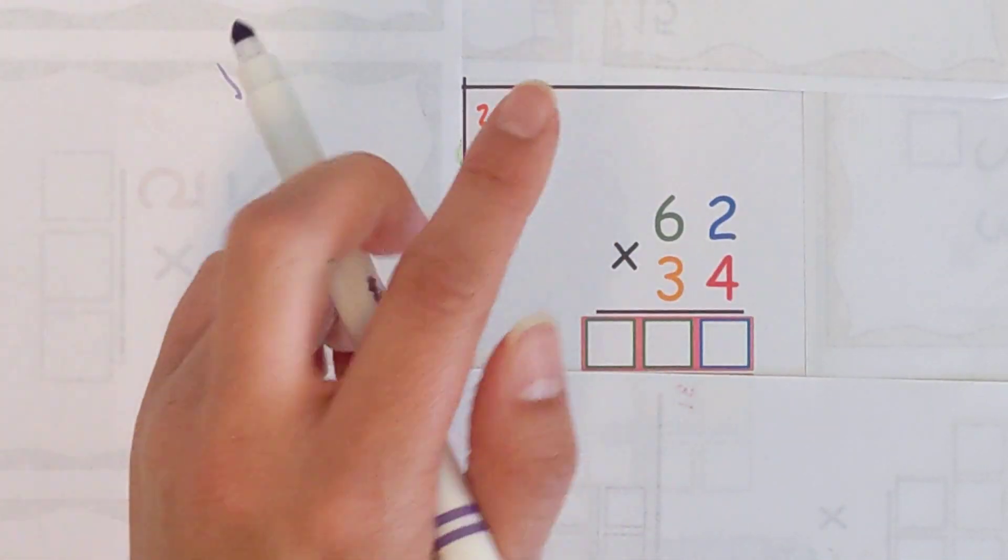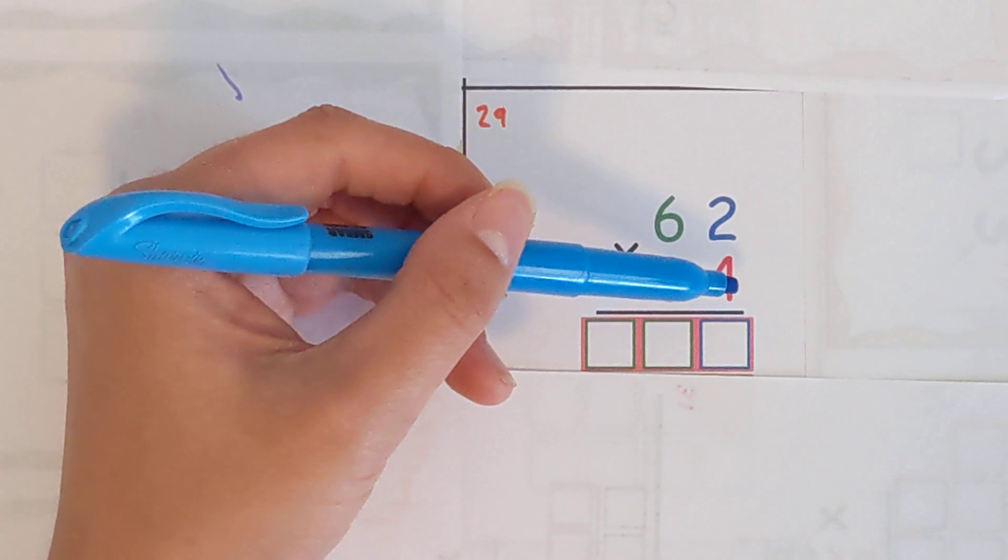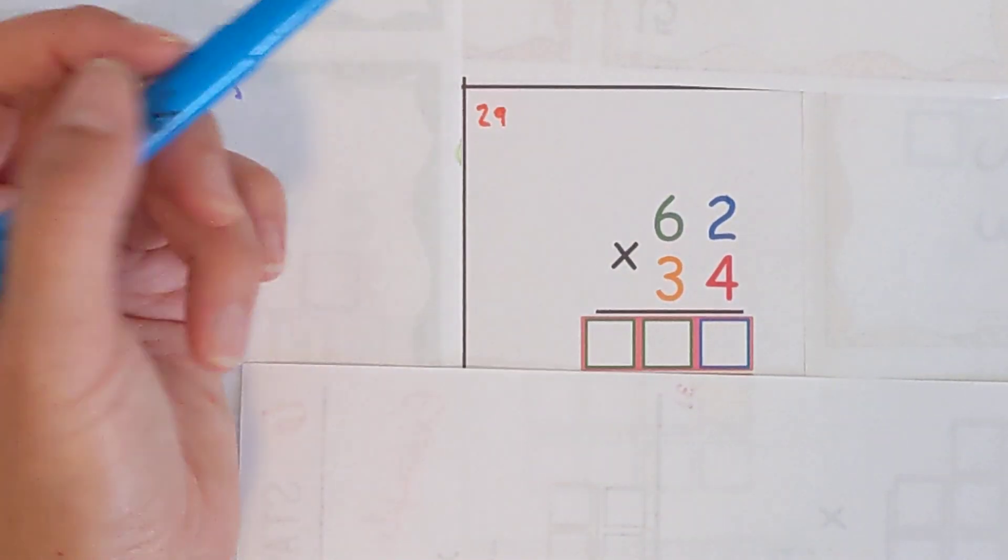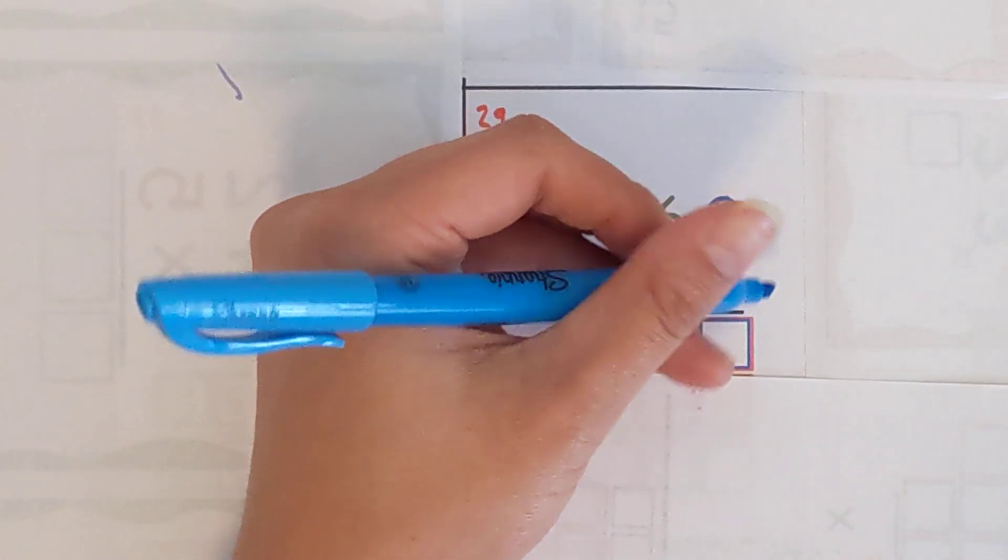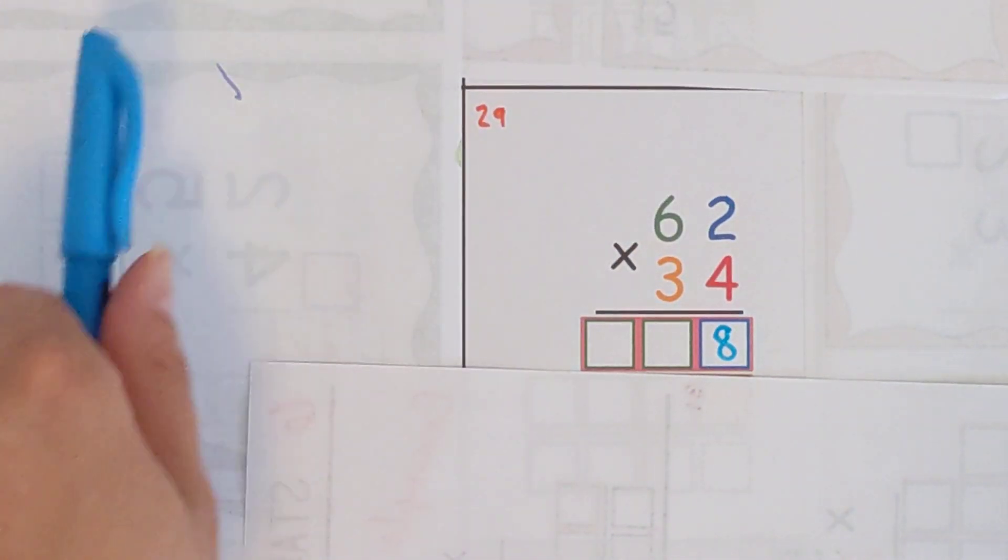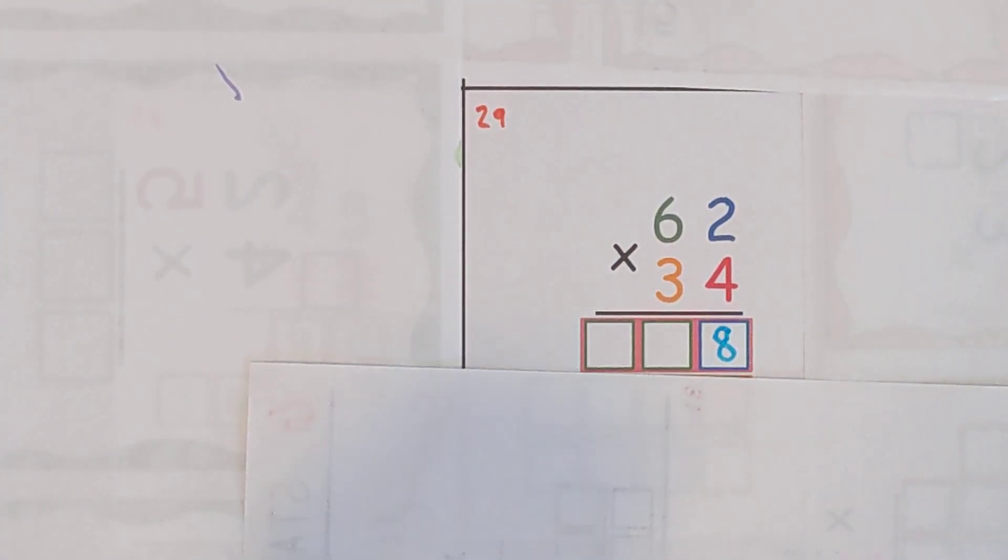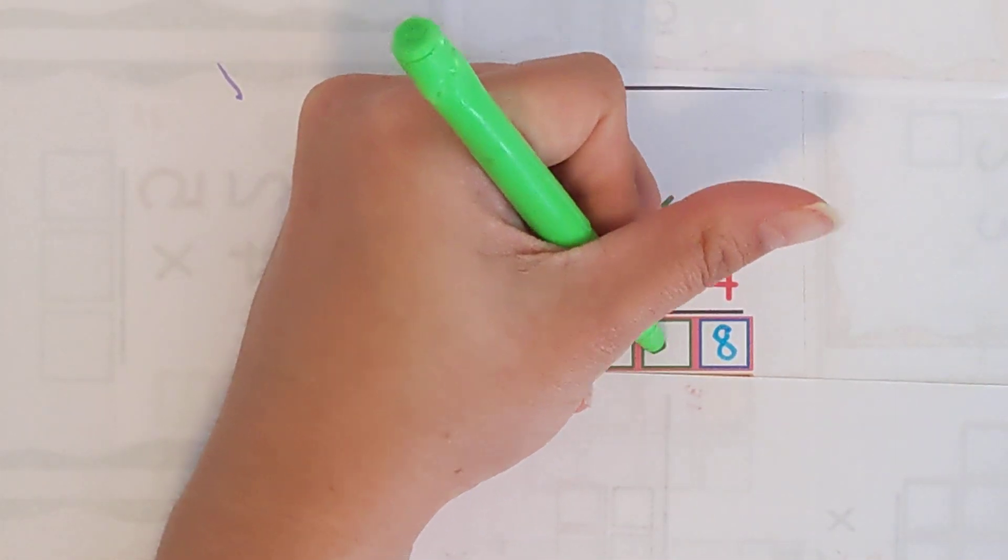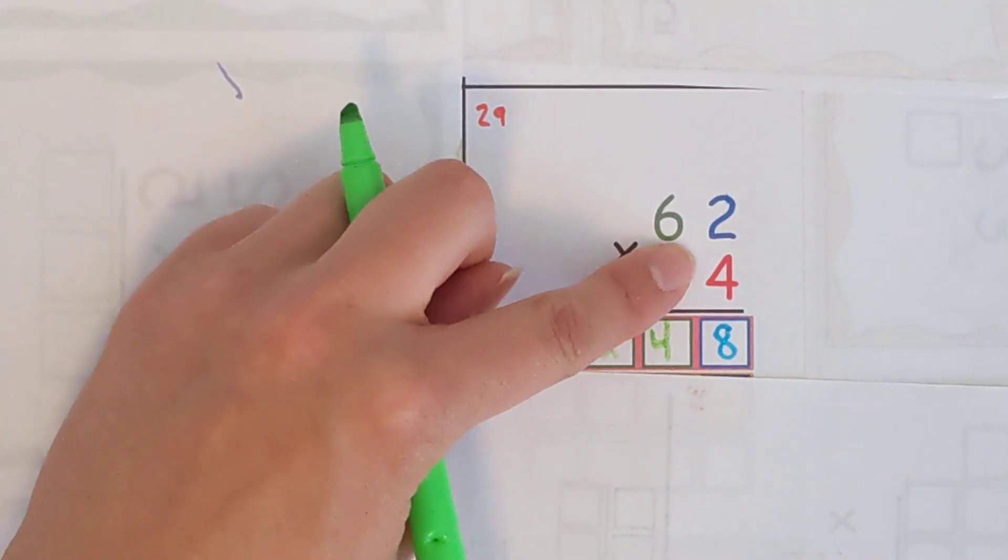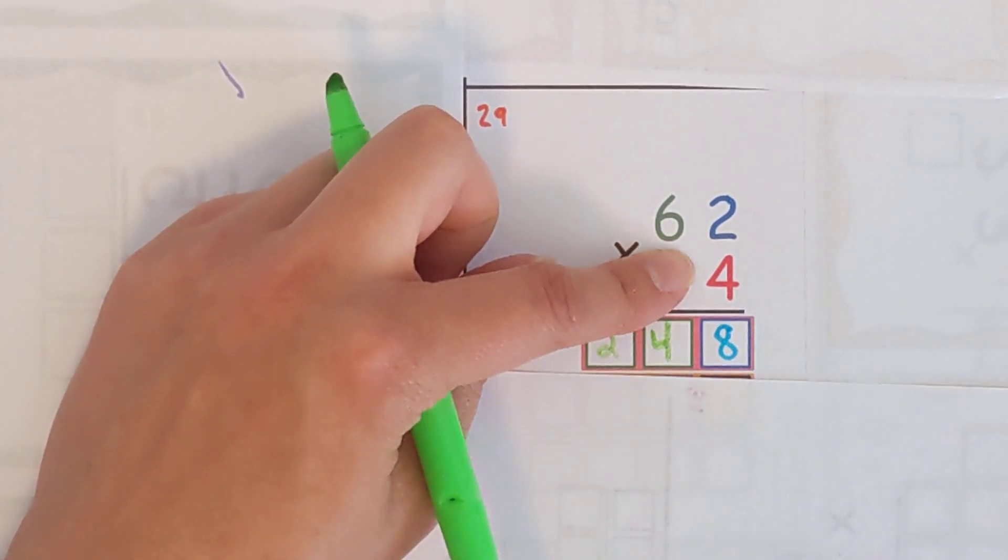To do that you're going to go right to left. We'll do four times two and then four times six. Four times two is eight and then four times six is 24. Not too bad. So we just did 62 times four which is 248.